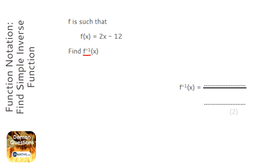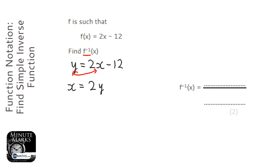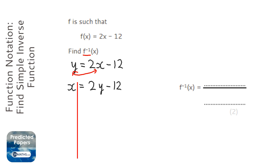The way I do this question is replace f of x with y and write it out. Then what you need to do is just swap all the x's and y's around. So it becomes x equals 2y minus 12. Now make y the subject — rearrange the equation to make y the subject.